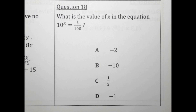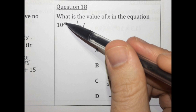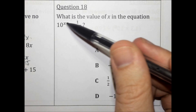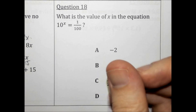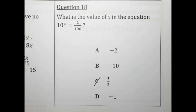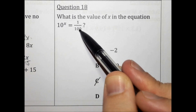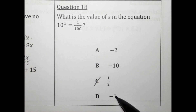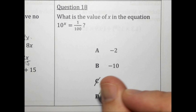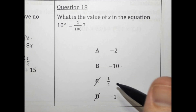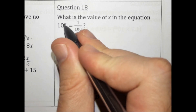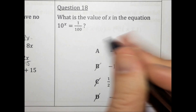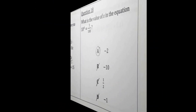What is the value of x in the equation 10 to the x equals 1 over 100? Our exponent needs to be negative because a negative exponent makes your answer a fraction. So it needs to be A, B, or D. Now we just need to figure out: 10 to what power is 100? 10 to the 2nd is 100, so 10 to the negative 2nd is 1 over 100. The answer to number 18 is A.